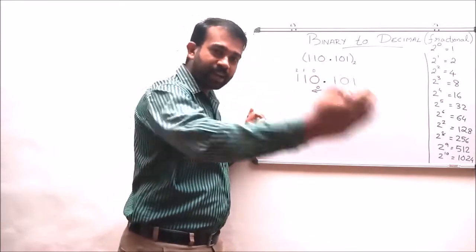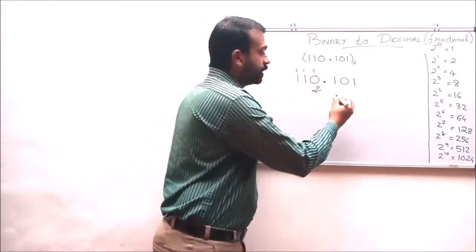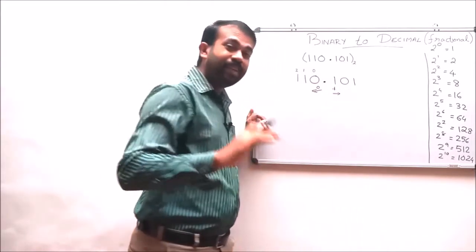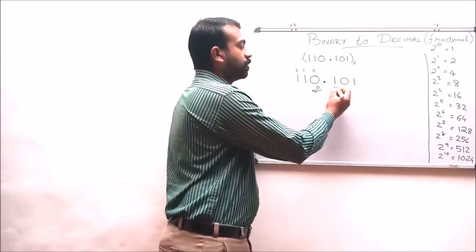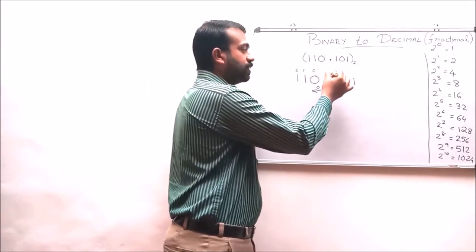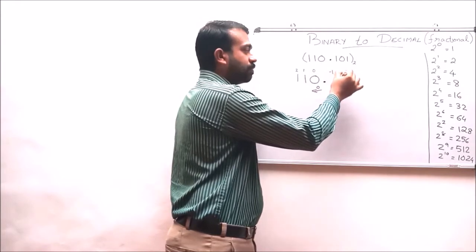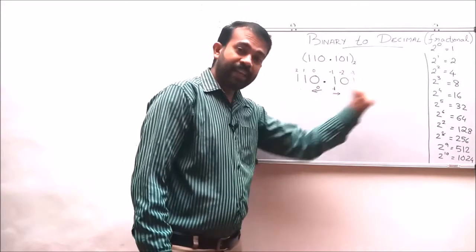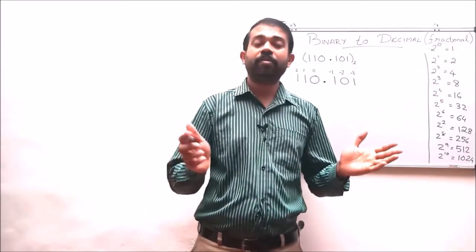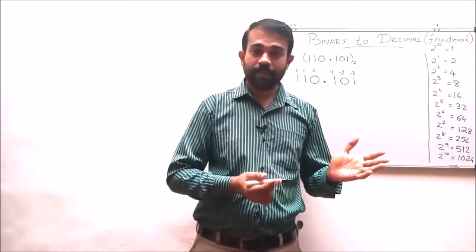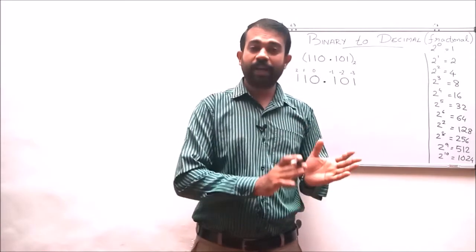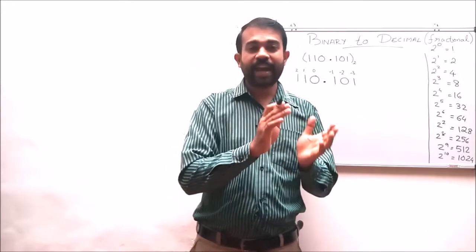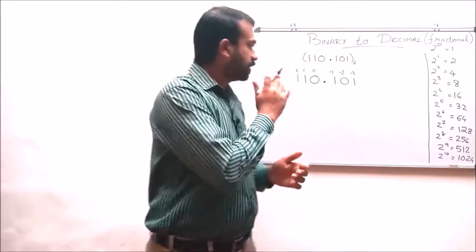For the rightmost portion, that is the fractional portion, the digit positions are counted from minus 1 with a decrement. So the digit position of this one is minus 1, this 0 is minus 2, minus 3, and moving towards the leftmost position. When converting a binary number into its decimal number, you multiply that particular binary digit with the digit power of 2 and add each individual result.